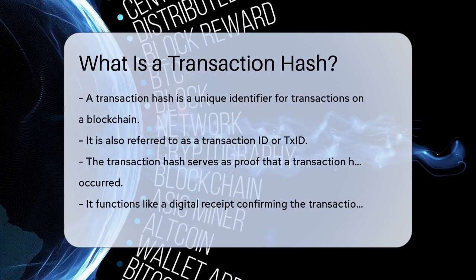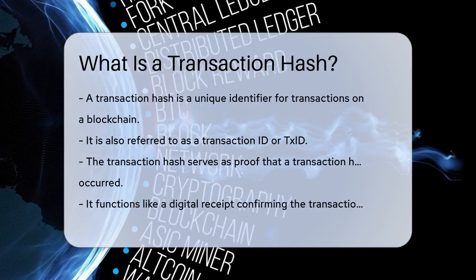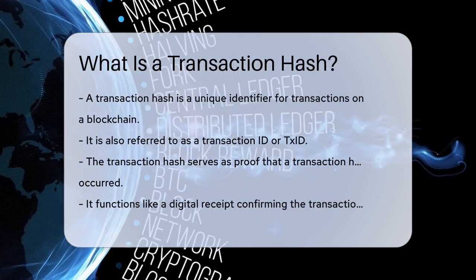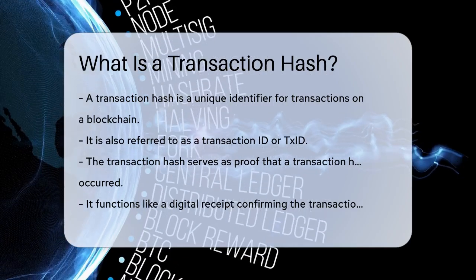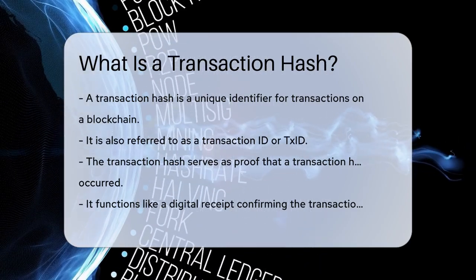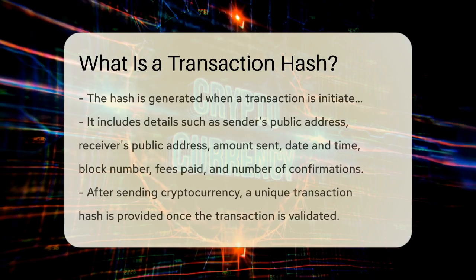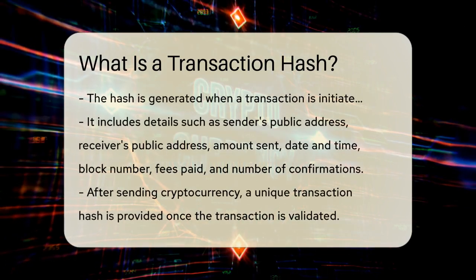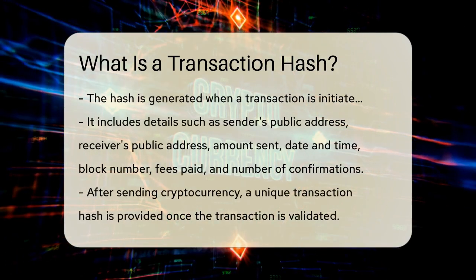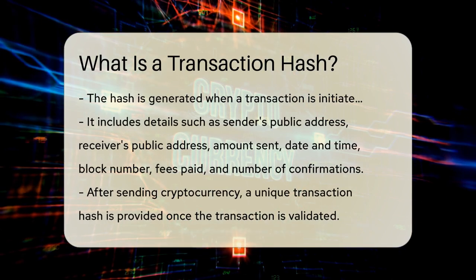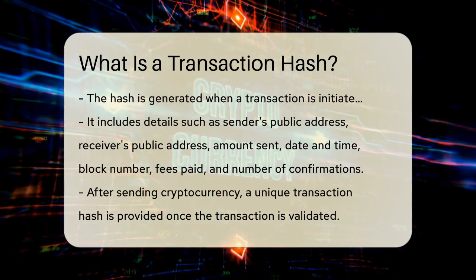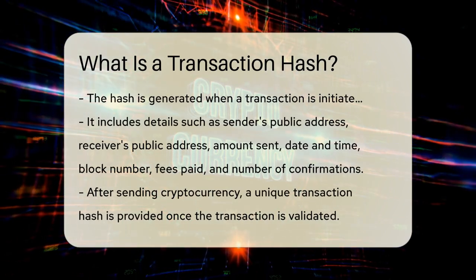This hash is generated whenever a transaction is initiated and includes a bunch of important details. For example, it contains the sender's public address, the receiver's public address, the amount sent, the date and time of the transaction, the block number it was recorded in, the fees paid, and the number of confirmations.